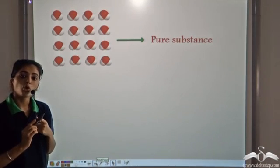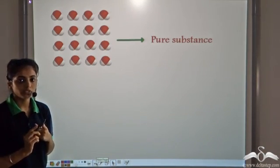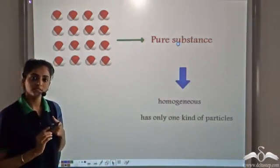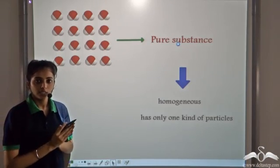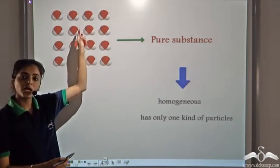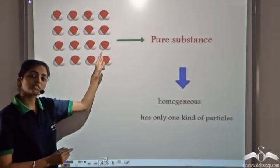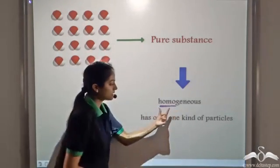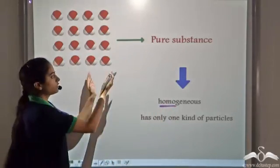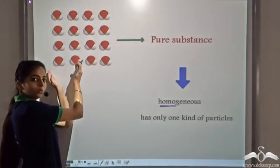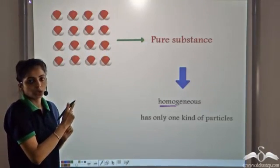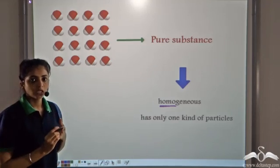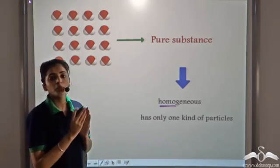So a compound is also a pure substance. A pure substance has two properties: it is homogenous and it has the same kind of particles. A compound has the same molecules throughout and it is homogenous — that is, it has the same composition throughout. So if you look at any part of the compound, we see that it has the same composition throughout, as it is made up of the same kind of molecules. Hence, a compound is also a pure substance.